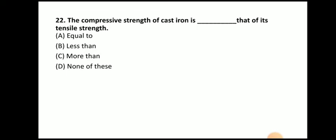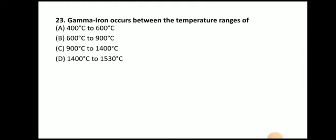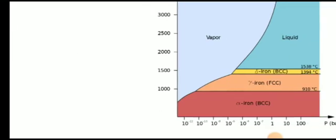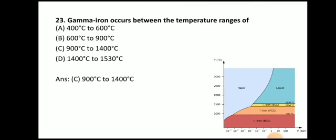Next question: The compressive strength of cast iron is — that of its tensile strength. The answer is more than. So the compressive strength of cast iron is more than its tensile strength, whereas the tensile strength of steel is more than its compressive strength. Gamma iron occurs between the temperature range of 900°C to 1400°C.